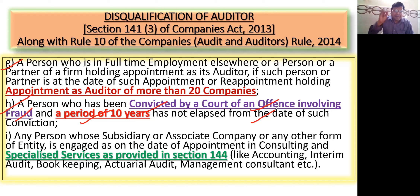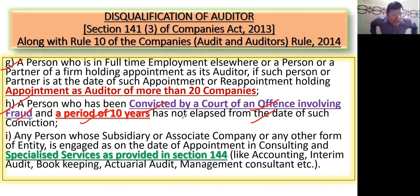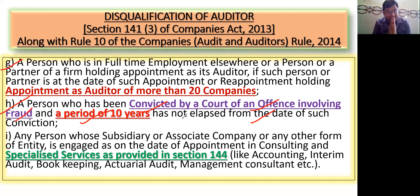कोई भी सजा हो, जब भी court ने दोषी करार दिया उस दिन से 10 साल तक मैं किसी company का auditor नहीं बन सकता। Example — मेरे को 5 साल जेल हुआ, 5 साल बाद जेल से आया, Reliance Company में जाना चाहा — लेकिन Clause H क्या बोलता है — जब भी fraud में दोषी पाए गए, court ने सजा सुनाई है, तो conviction के date से 10 साल तक किसी company का auditor नहीं बन सकते।